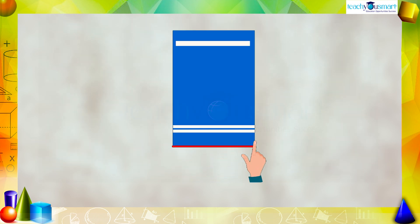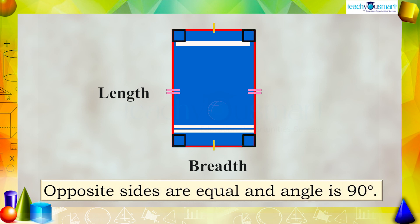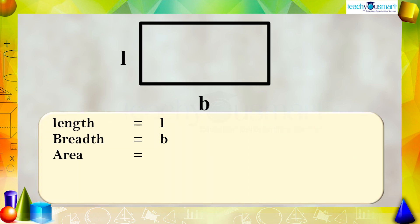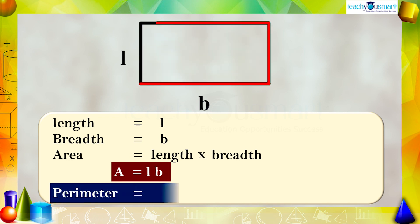We already saw the paper of the book — what is its shape? Yes, it is rectangular in shape, since both pairs of opposite sides are equal and each angle is 90 degrees. The rectangle of length l and breadth b has area A = length multiplied by breadth, that is A = lb. And the perimeter is 2 multiplied by (l + b).